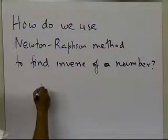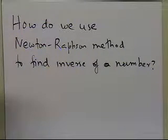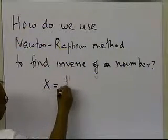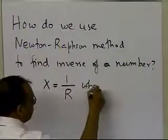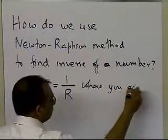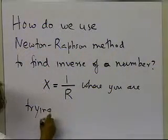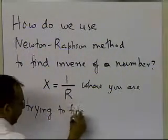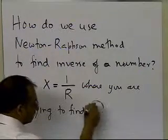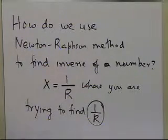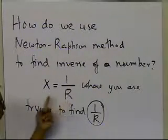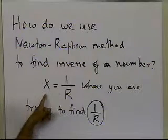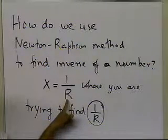So let's go ahead and look at it this way. Since we are using Newton-Raphson method, it has something to do with solving an equation. Let's suppose somebody says you can solve the equation x is equal to one by r, where you are trying to find one by r. Because I'm interested to find the inverse of a number, if I write down the equation x equals one by r and if I am able to solve for x, that means I will be able to find out what the inverse of r is.